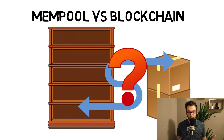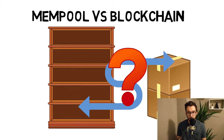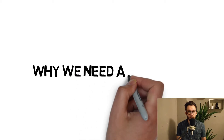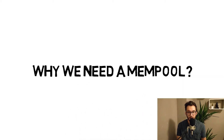Unconfirmed transactions are not put immediately into a block. Miners — the warehouse workers — choose which transactions go into the next block. It's like a catch-all staging area for transactions: everything goes in there first, and then somebody takes it and puts it in that block.